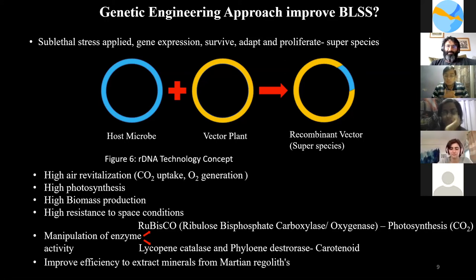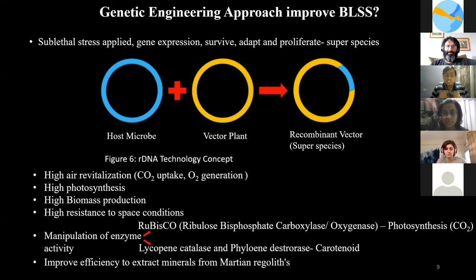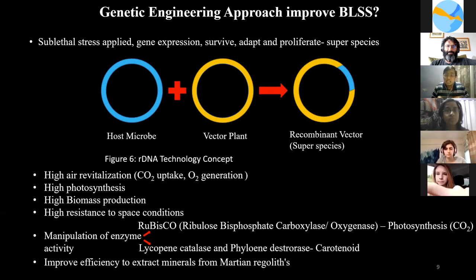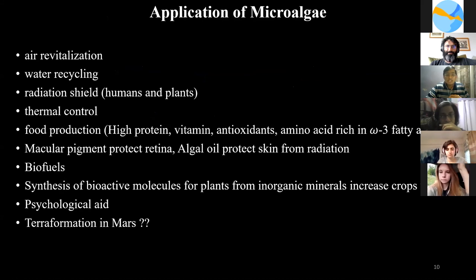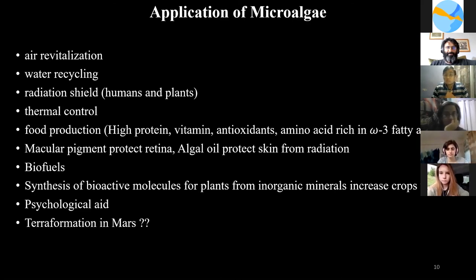Finally, if cyanobacteria have the ability to take inorganic salts or minerals directly from Mars — that is, a good leaching capacity — it will be better, because most nutrients are not on the surface but inside rocks. If cyanobacteria cannot access them, it cannot survive, so we need to focus on that. They also have a good radiation shielding capacity and help maintain a good temperature in the biological life support system where astronauts live.